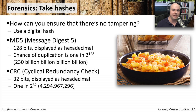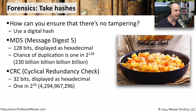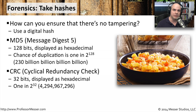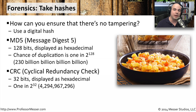Another type of hash is a CRC, or Cyclic Redundancy Check. This is a much smaller type of check — it's only 32 bits long and is also displayed as hexadecimal. The chances of a CRC being duplicated after a change are 1 in 2 to the 32nd power, which is just over 4 billion to 1. You'll notice that in your hardware — hard drive checks and memory checks — they use CRCs.